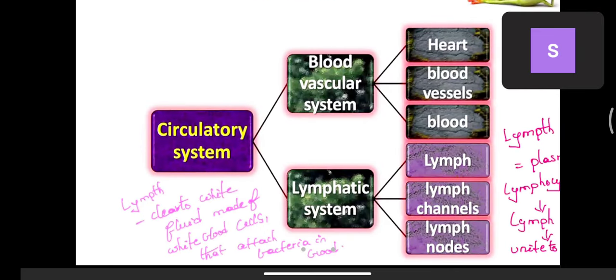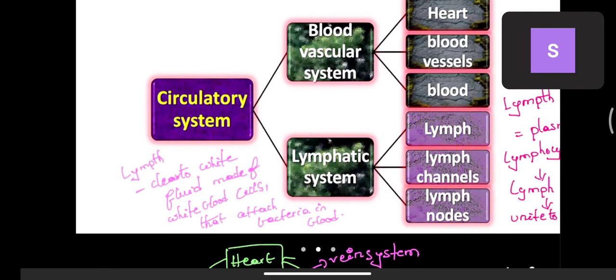The frog has two types of circulatory systems: the blood vascular circulatory system and the lymphatic system. The blood vascular system has three parts: heart, blood vessels, and blood. The lymphatic system has lymph, lymph channels, and lymph nodes.